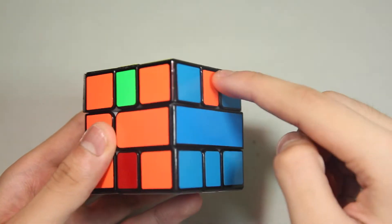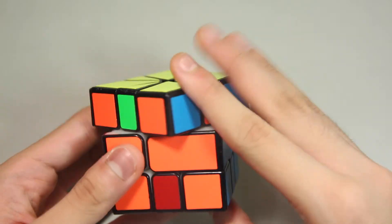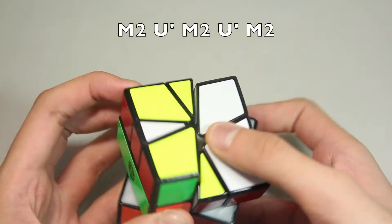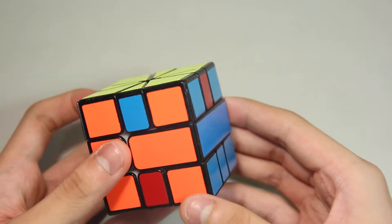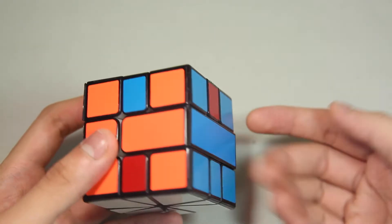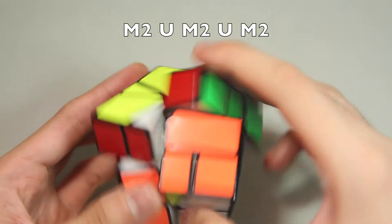So in this case, the O is clockwise. If it's clockwise, what you want to do is M2, U prime, M2, U prime, M2. And the same thing if it's counterclockwise, you just go the other way: M2, U, M2, U, M2.